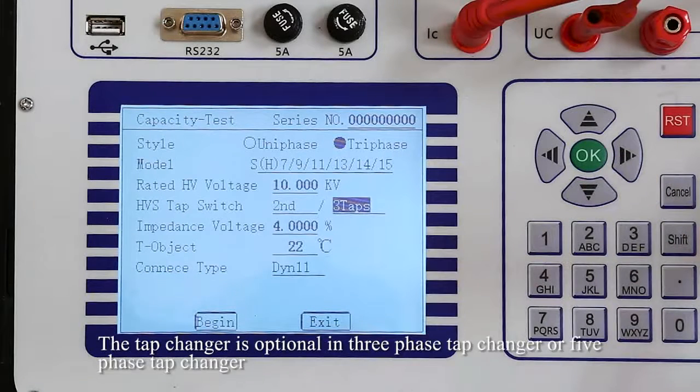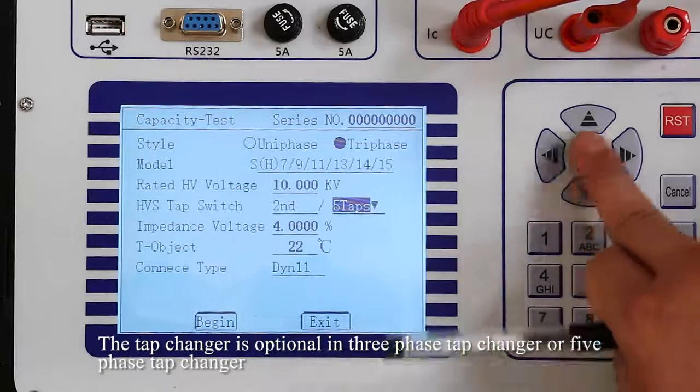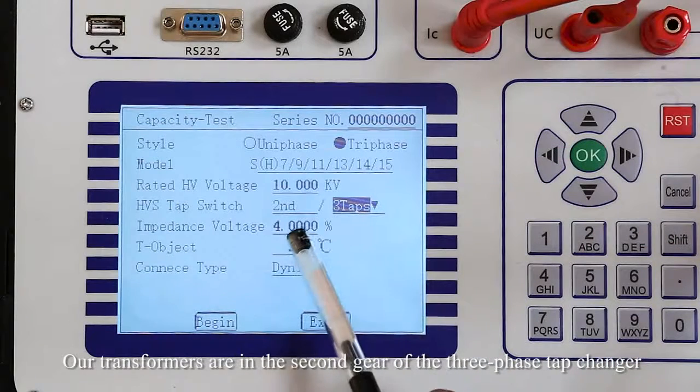The tap changer is optional: three-position tap changer or five-position tap changer. Our transformer is in the second position of the three-position tap changer.